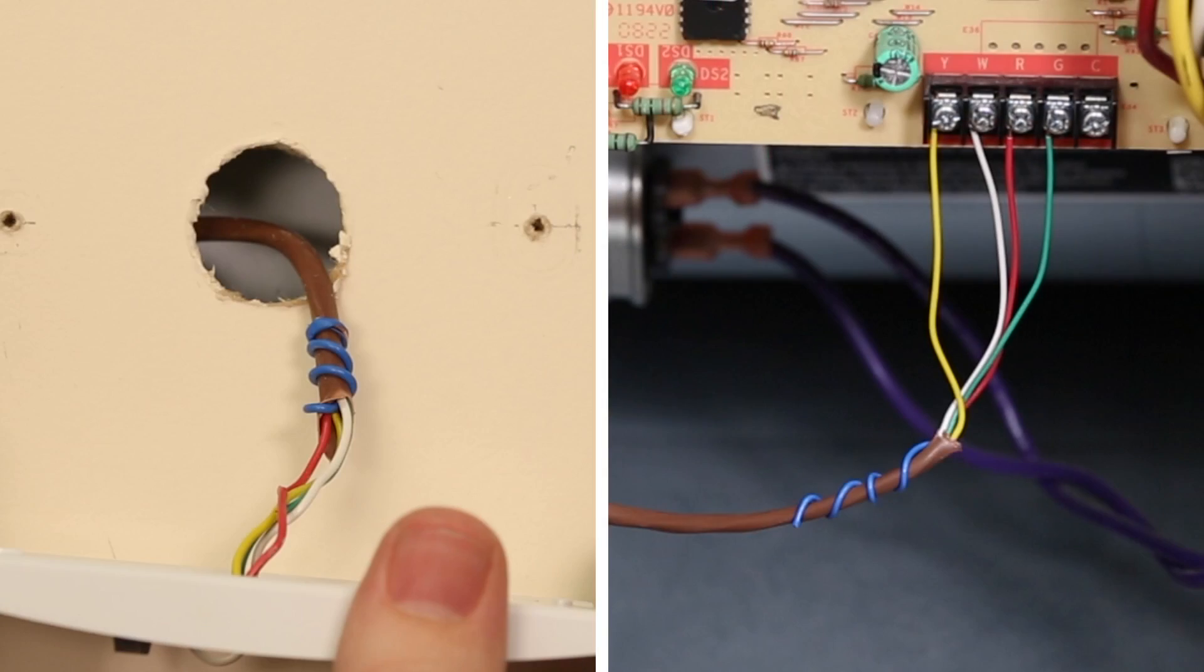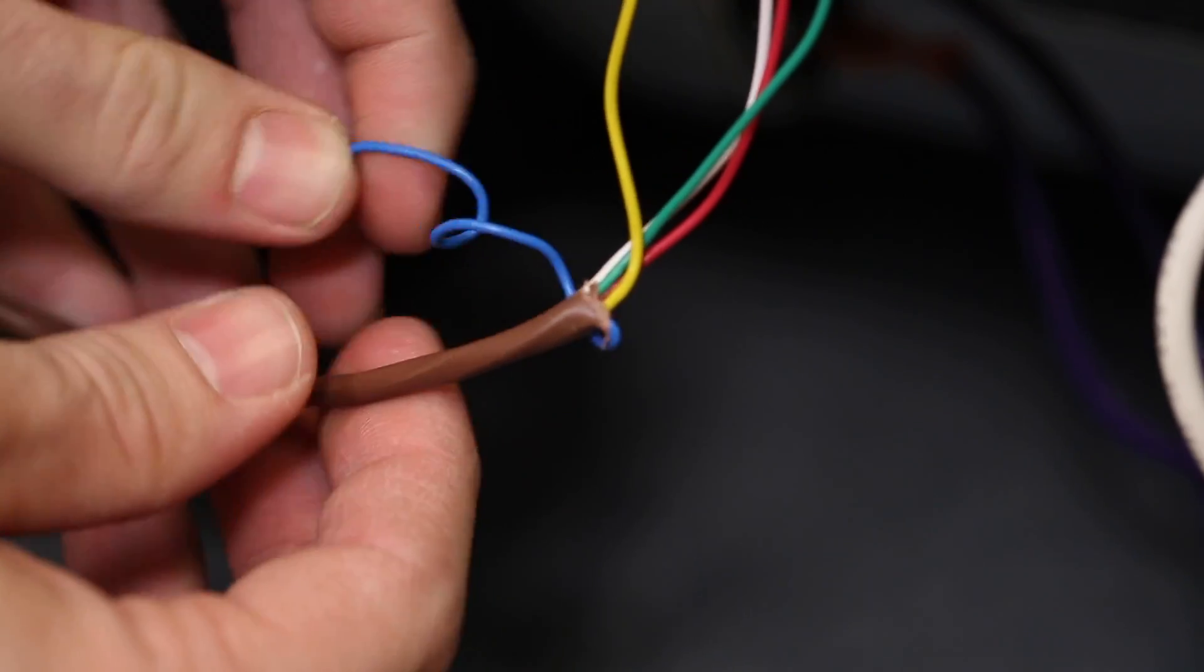In most cases, this unused wire should be the same color as the unused wire at your thermostat. This unused wire may be wrapped around the wire bundle, wire nutted, or taped off. Unwrap this wire and bring it to the control terminal board.